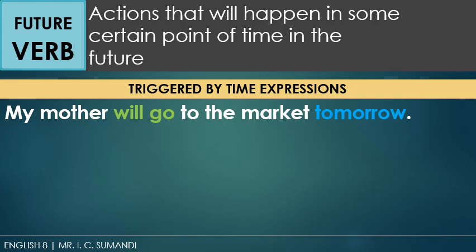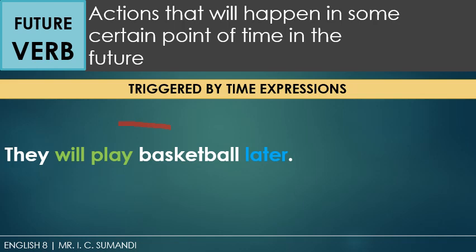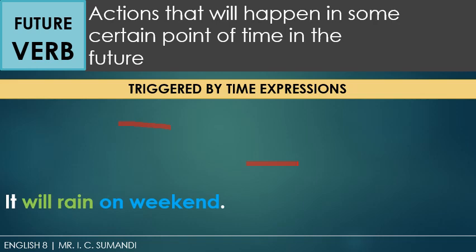The future tense of the verb is the easiest. We just need to remember the formula: will plus verb. Sentences with future context usually have a future time expression. For example, they will play basketball later. This future form indicates the probability of actions that will happen in the future — for example, it will rain on the weekend. This is not certain, but there is a 50% chance that it will rain. I would like to disclaim that these are only the basic tenses of the verbs; there are other tenses beyond these three, but that will be our topic for some other time.